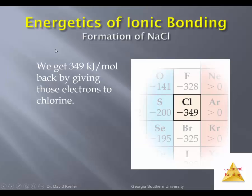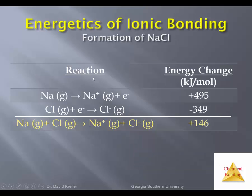Now let's take that electron from sodium and give it to chlorine, because in the product sodium chloride, we have to have chloride ions. Adding an electron to each of a mole of chlorine atoms releases energy — 349 kilojoules per mole of chlorine atoms having electrons added to them. So let's look at these two steps so far.